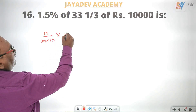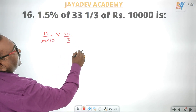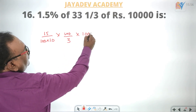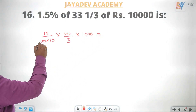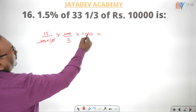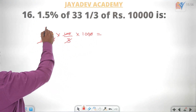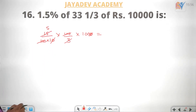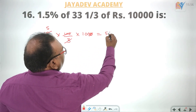So here 100 by 3, into 10,000 is equal to 100. 100 cancels, zeros cancel. The answer is 500.